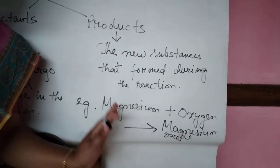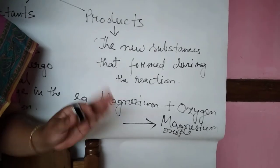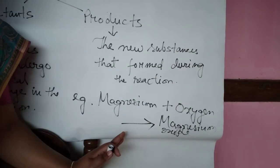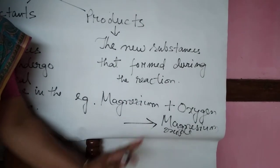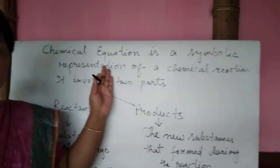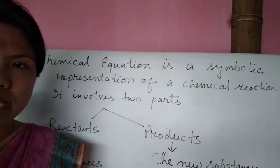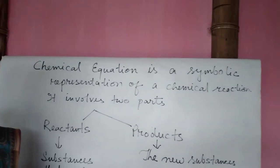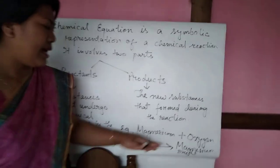In your class 9, you have learned about symbols, so this all will be represented in symbols. That's why, by definition, it is a symbolic representation of all the elements present or of the compounds newly formed. So magnesium you can write as the symbol.